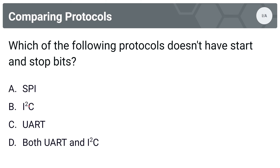Next question: which of the following protocols doesn't have start and stop bits? Options are A, SPI; B, I2C; C, UART; or D, both UART and I2C. The answer is SPI. SPI doesn't have a frame format like I2C and UART — it is a continuous stream of bits. SPI is the only protocol here that doesn't have start bits and stop bits.